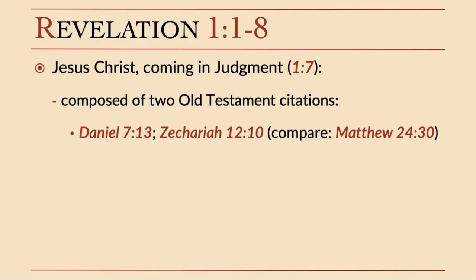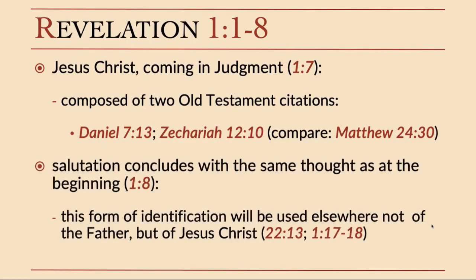We've got one last verse to look at — Revelation chapter 1 verse 8: 'I am the Alpha and the Omega, says the Lord God, who is and who was and who is to come, the Almighty.' We saw the phrase 'who is and who was and who is to come' already in verse 4 — 'grace to you and peace from him who is and who was and who is to come.' Down here in verse 8 we get it again at the end of the salutation. So at the beginning of the salutation in verse 4 and at the end in verse 8, we get this identification of God.